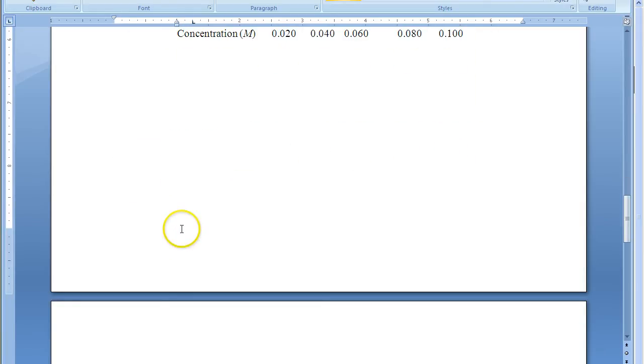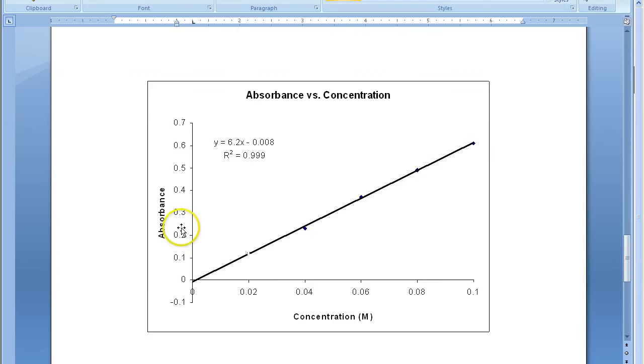We can make a graph of this data. And this is what you're asked to do in pre-lab question two, where we want to put the absorbance on the y-axis and the concentration on the x-axis. You should use Excel to make this graph and add the trend line.